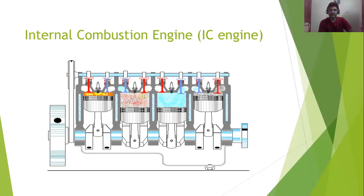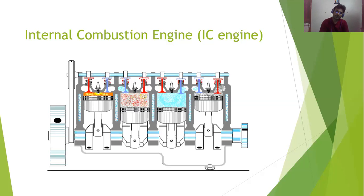The next slide shows the internal combustion engine — the exact engine setup in a recent automobile. On the left end you can see the flywheel, and on the right end there is a shaft connecting all the crankshafts. Here, inside the engine cylinder, the combustion takes place. There are inlet and exhaust valves. In a petrol engine you have a spark plug, and in a diesel engine there is a fuel injector. The entire operation takes place within the engine cylinder — that's why it is the internal combustion engine we use nowadays.